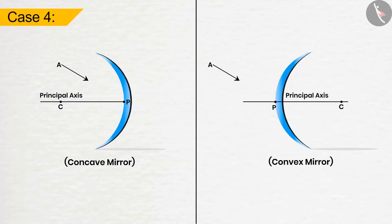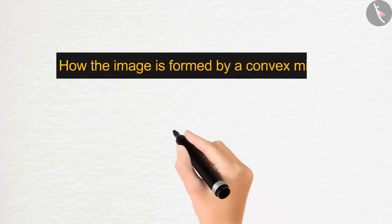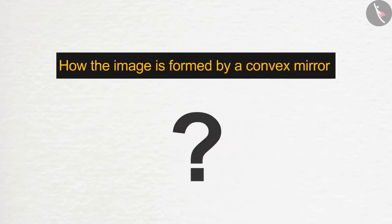Case 4. If the ray of light falls obliquely to the principal axis towards the pole, then it will be reflected back obliquely, making an equal angle to the principal axis. Now Rahul will show you an activity for how the image is formed by a convex mirror.